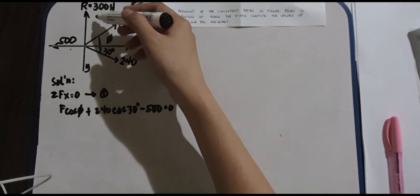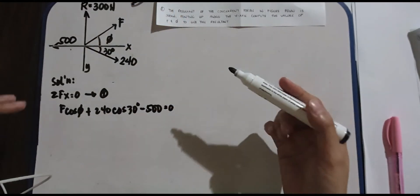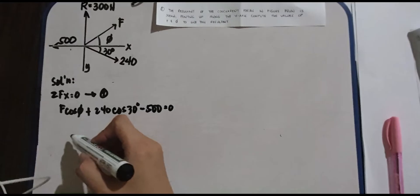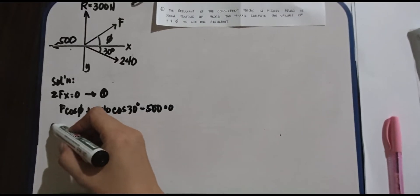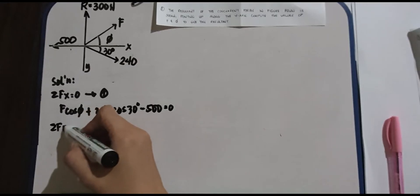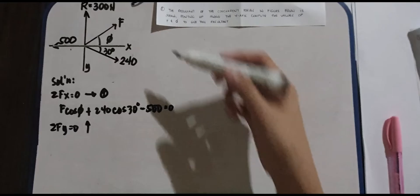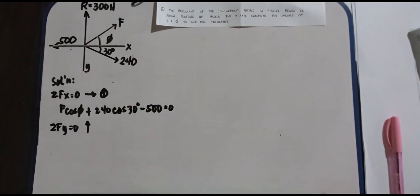Why didn't we include the resultant? It's because the resultant is different from the component of our X and Y forces. Next, we have summation forces Y equals 0, upward is positive. What are the upward forces? Did we include R? No. It's because it's the resultant, not part of our components.